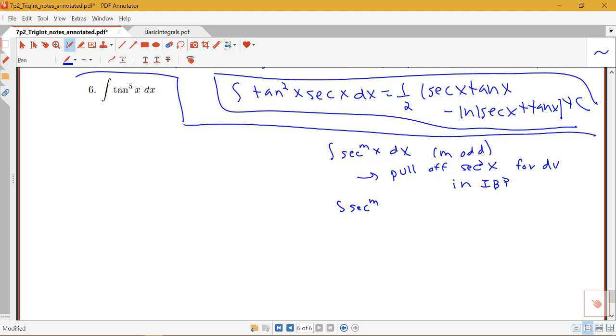If, on the other hand, you have secant by itself but the power is even, you're going to pull off secant squared x for du in a u substitution. And write the remaining secants that exist in terms of tangents so you can let u be equal to tangent.